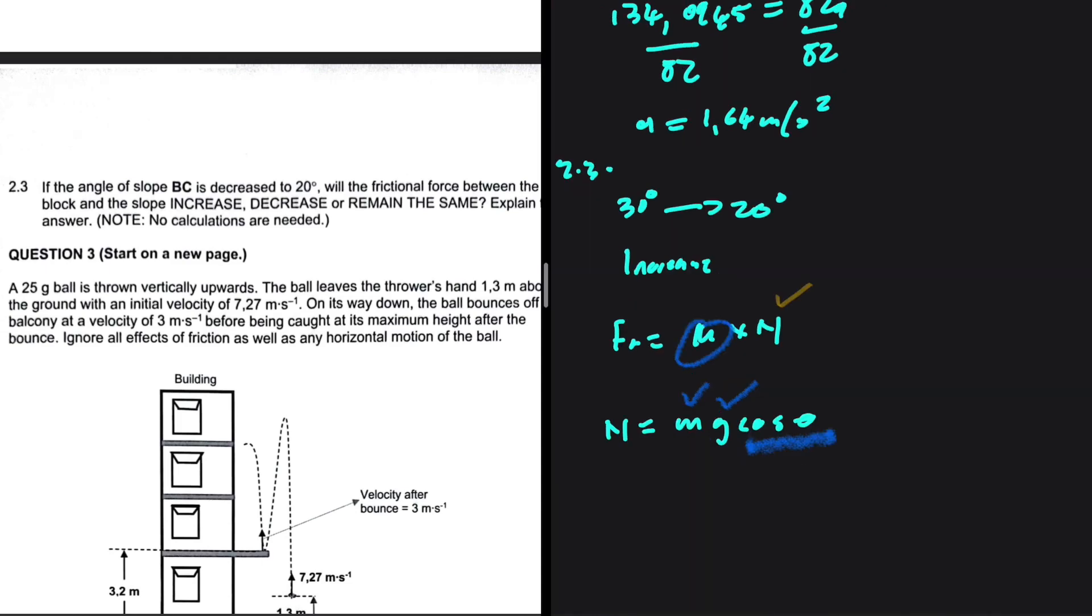If the angle decreases, does the normal force increase or decrease? We know that cos 0° is 1 and cos 90° is 0. If you decrease the angle, the normal force increases. If you increase the normal force, the frictional force is going to increase.